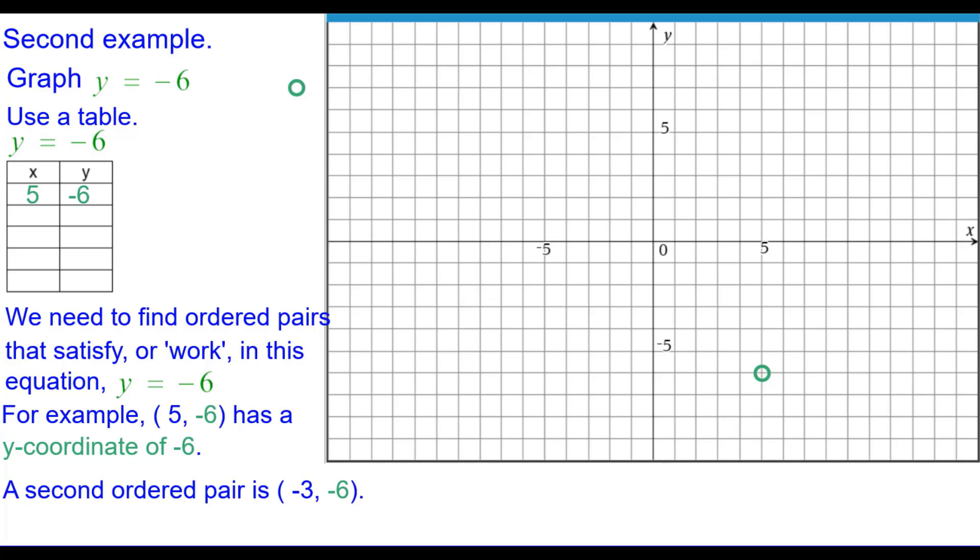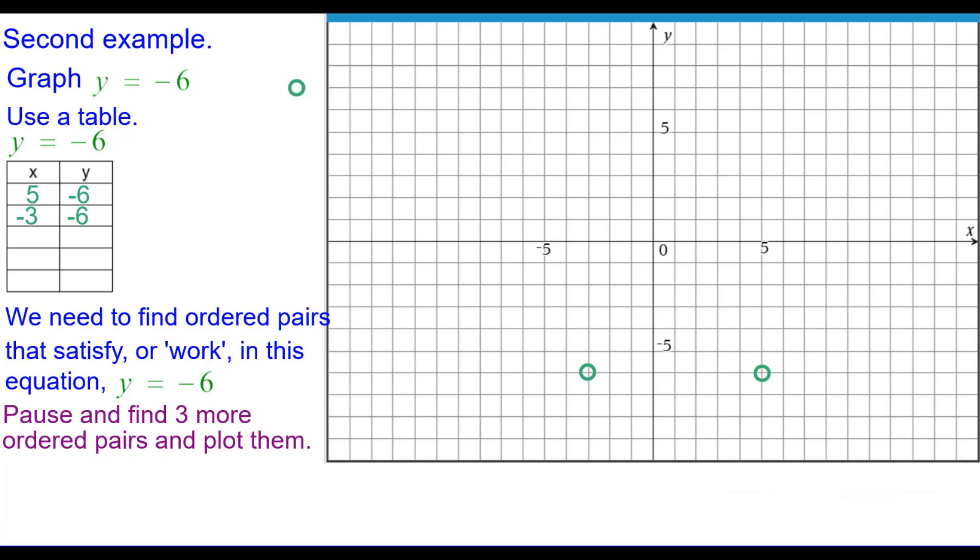A second ordered pair would be negative 3 comma negative 6. So we'll plot that one. Please press pause and find three more ordered pairs and plot those. Press pause and resume when you're ready.